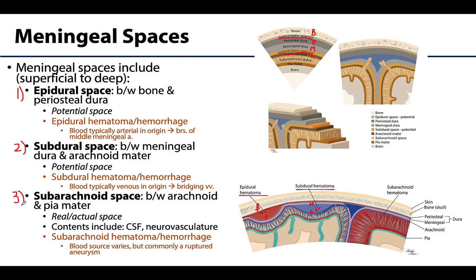Lastly we have the subarachnoid space, which is an actual or real space that in a healthy individual has lots of structures running through it — cerebrospinal fluid as well as neurovasculature. However, hemorrhages can also occur in this space due to many causes such as head trauma, but most commonly a subarachnoid hematoma occurs because of a ruptured saccular aneurysm (aneurysms will be discussed soon). The blood escapes and is held within the subarachnoid space — between the arachnoid and the pia mater — and this is referred to as a subarachnoid hematoma or hemorrhage.